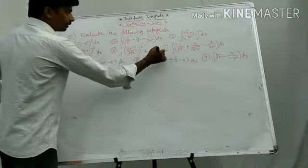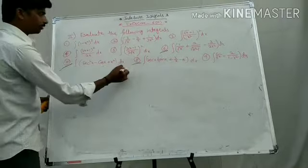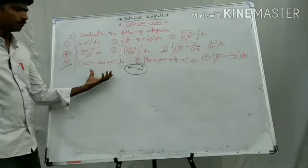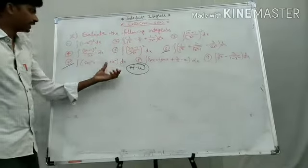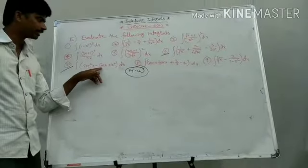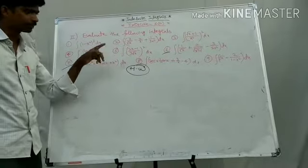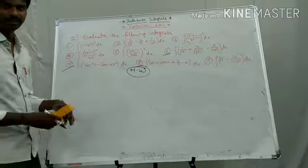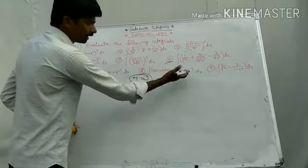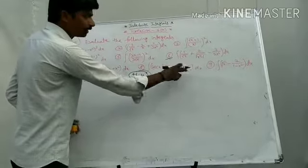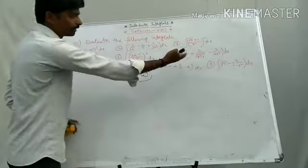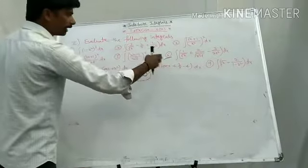Problems 6, 7, and 8 are homework. For number 7: integral secant squared x gives tan x, integral cos x gives sin x, integral x squared gives x cubed by 3. For number 8: integral secant x tan x gives secant x, integral 1 by x gives 3 log x, integral 4 gives 4x. These use direct formulas.